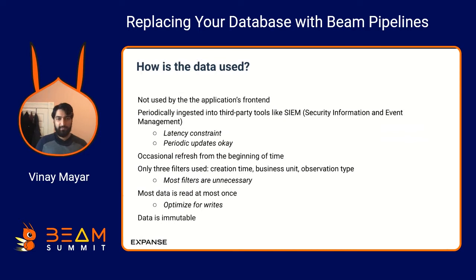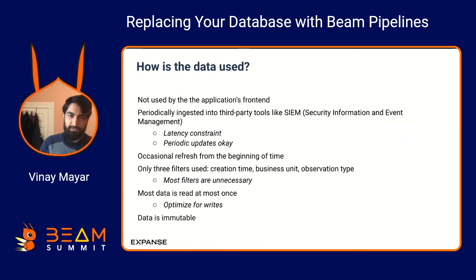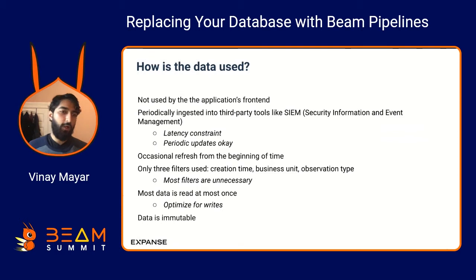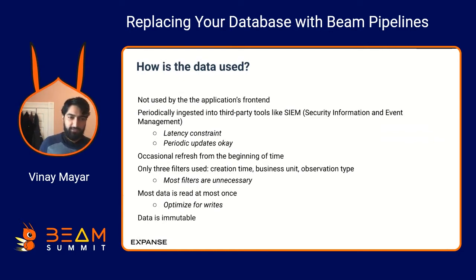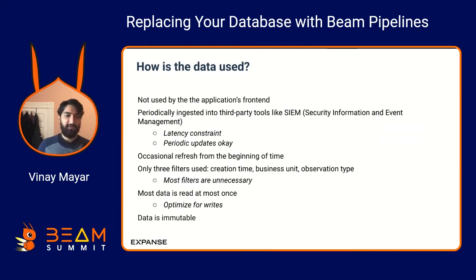That led us to rethink this API: what is it being used for and what are the requirements around this data? The data was not used by our application's front end — people would periodically ingest it into third-party tools. They only really cared about three filters: creation time of the observation, which organizational unit the observation was found in, and what type of observation it was. Most of our filters were unnecessary. Most people were just reading new data, so we can optimize for writes. And we had the key insight that our data is immutable — we are not changing it — giving us a lot more flexibility in storage technologies.